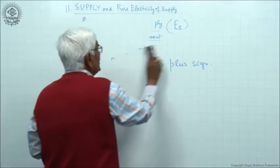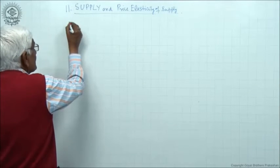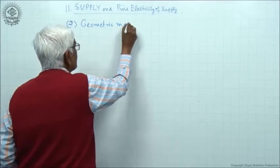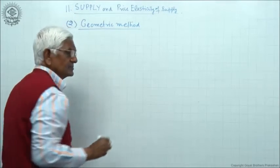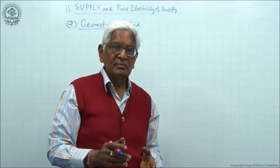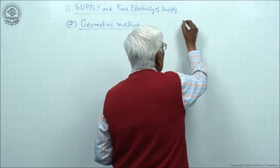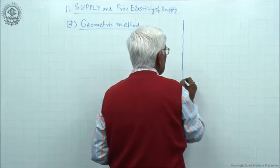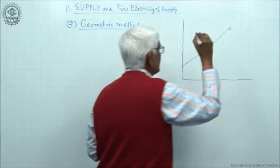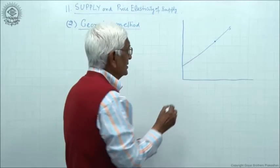Then we come to the second method, which is different from what you studied in case of demand. It is called the geometric method — also a point method. We measure price elasticity at a point on the supply curve in the same way as in demand. Let us first take an example. Suppose this is the supply curve and we want to find price elasticity at a point — let this point be A.